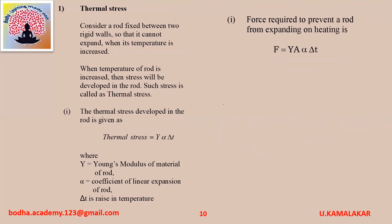Thermal stress: consider a rod fixed between two rigid walls so that it cannot expand when temperature is increased. When temperature of the rod is increased, stress will develop in the rod — such stress is called thermal stress. The thermal stress developed is given as thermal stress equals Y alpha delta T, where Y is Young's modulus of material of rod, alpha is coefficient of linear expansion of rod, and delta T is rise in temperature. The force required to prevent the rod from expanding on heating is given as F equals Y A alpha delta T.